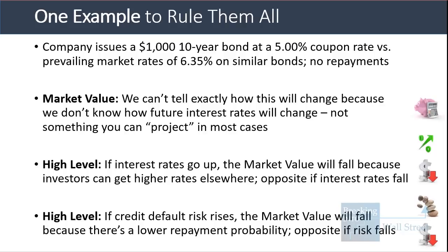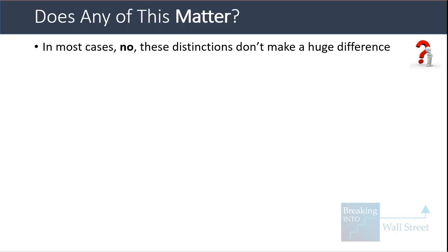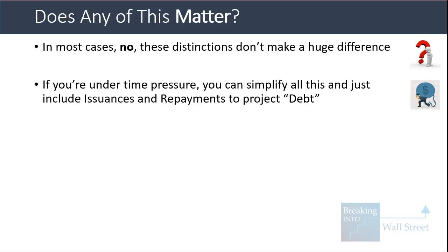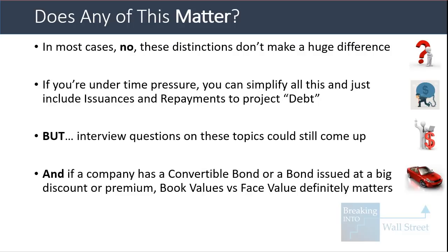You might ask whether any of this matters. In most cases these distinctions don't make a huge difference — under time pressure you can simplify and just include issuances and repayments to project debt, leaving out discounts, premiums, and issuance fees. However, interview questions on these topics do come up, and if a company has a convertible bond or one issued at a big discount or premium, book value versus face value definitely matters. Make sure you're calculating cash interest expense based on the face value, not the book value.